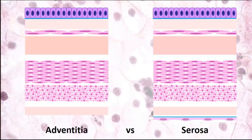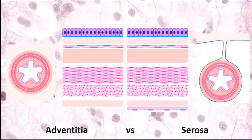Histologically, adventitia is simply a layer of loose fibrous connective tissue containing blood vessels and nerves. Serosa (cirrhosa) has the same connective tissue but is additionally covered by a thin layer of simple squamous epithelial cells called mesothelium — the outer covering of the serosa. When studying histology of different organs, you should remember their anatomy and whether they are covered by peritoneum. If covered by peritoneum, the organ has serosa.